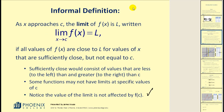An informal definition: as x approaches c, the limit of f of x is L, written with this notation, if all values of f of x are close to L for values of x that are sufficiently close but not equal to c. Sufficiently close consists of values that are less than and greater than c. Values that are less than c would be to the left of c; values greater than c would be to the right.